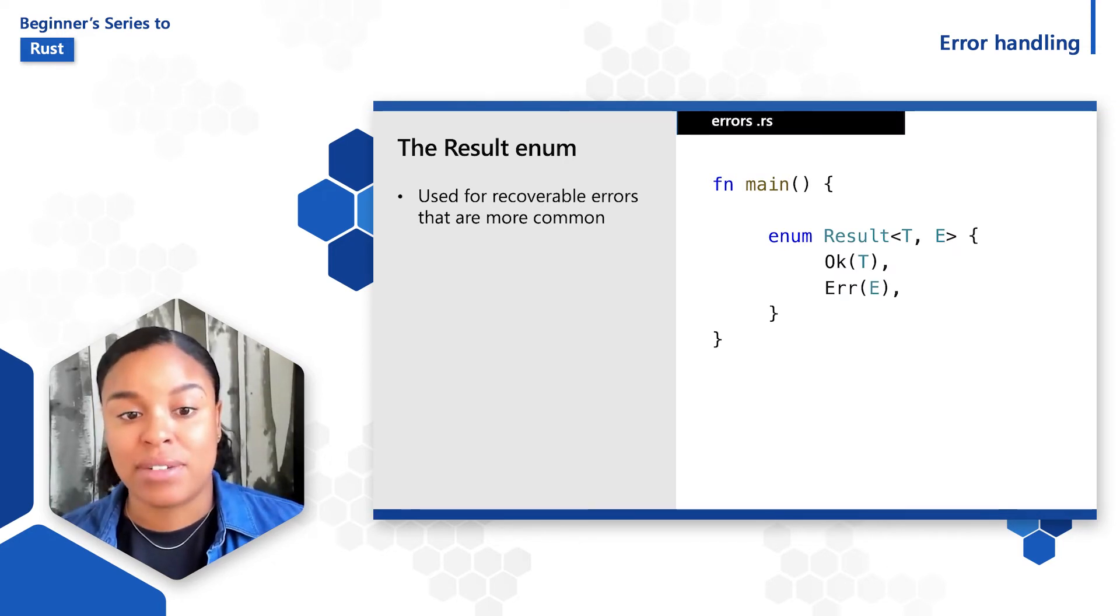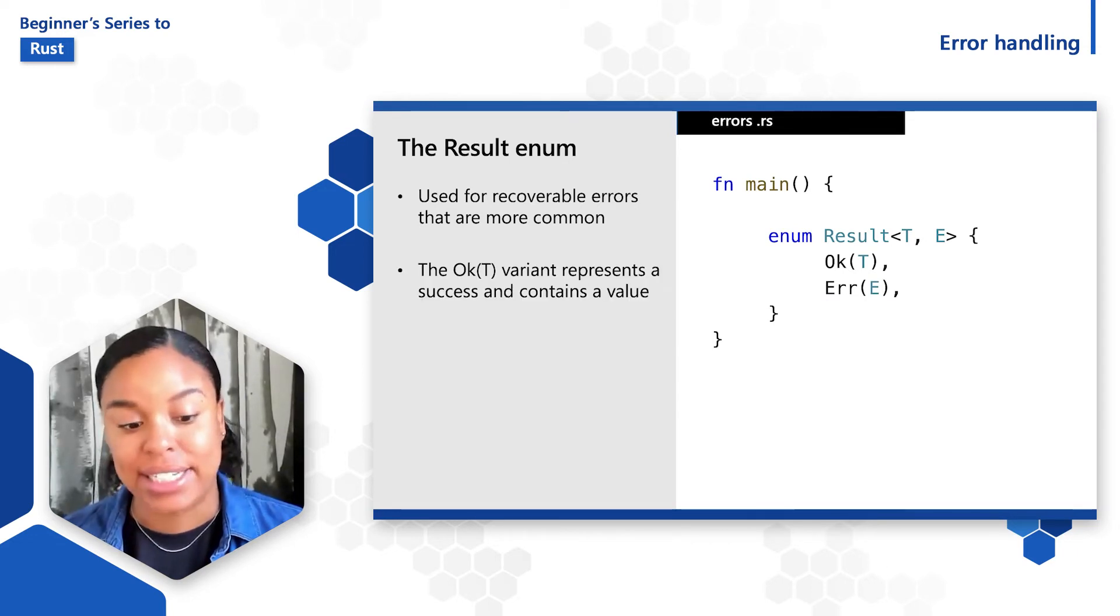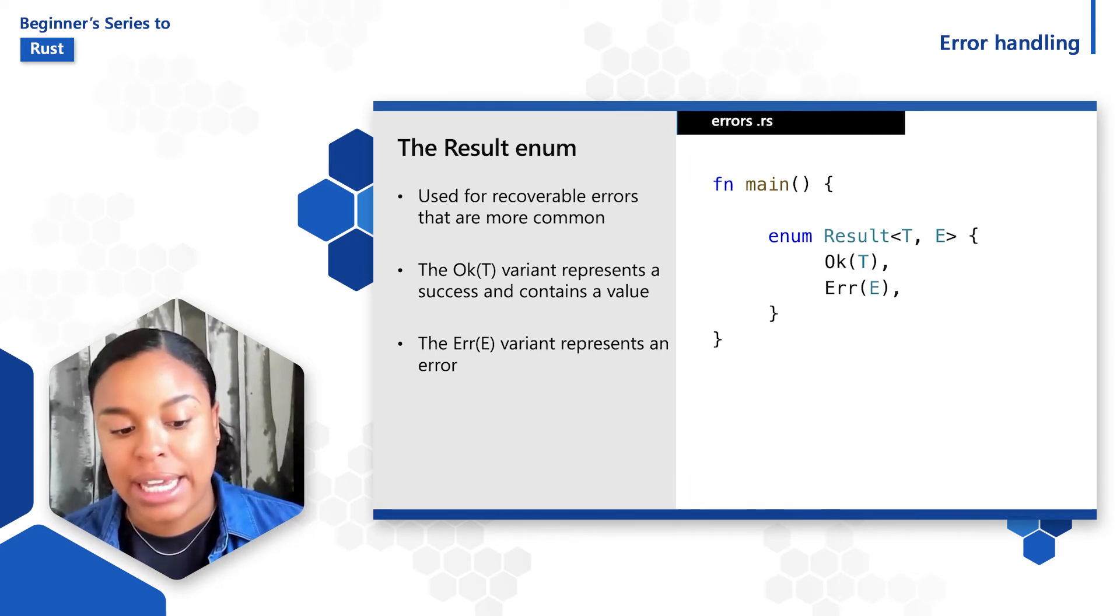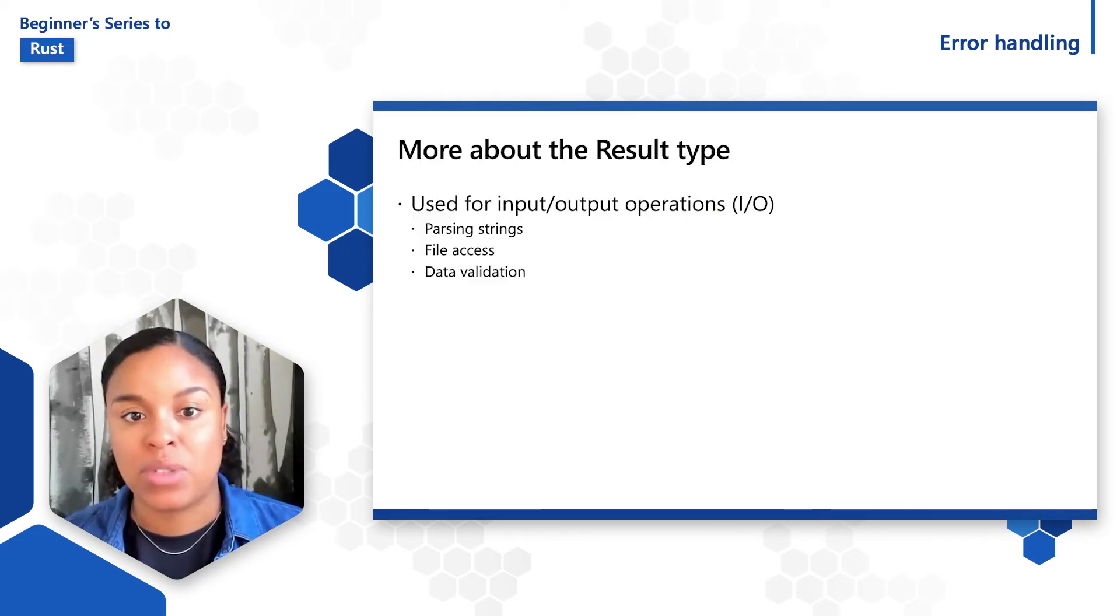The result enum is defined as the following. We have an enum named result with type T and E. These are both generic types and the variants that the result enum has are okay and error. So the okay T variant represents a success and contains a value. The error E variant represents an error.